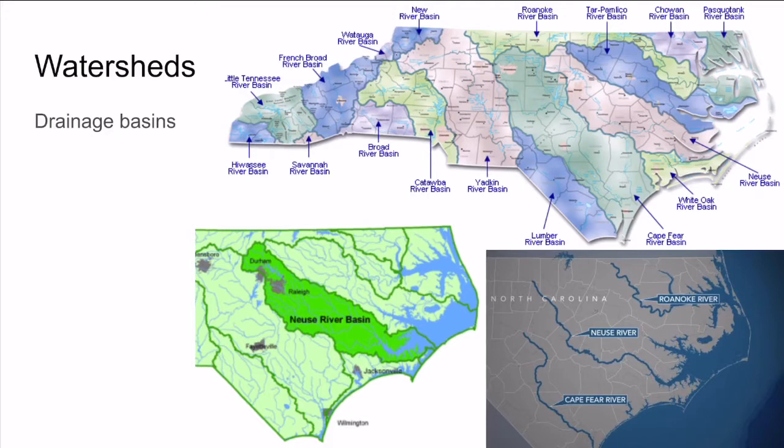Our state, North Carolina, has 17 river basins. The Hiwassee, French Broad, Watauga, New, and Little Tennessee eventually make their way to the Mississippi River Basin, where they flow to the Gulf of Mexico. The New River, ironically, is one of the oldest rivers on Earth — actually older than the Atlantic Ocean. The rest of our river basins eventually flow into the Atlantic Ocean. Parts of Wake County live in the Neuse River Basin, while others live in the Cape Fear River Basin.